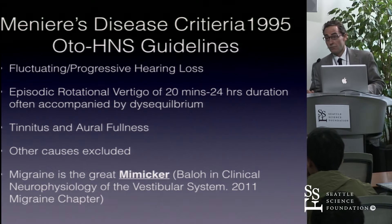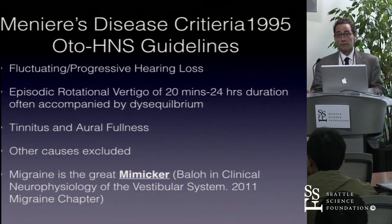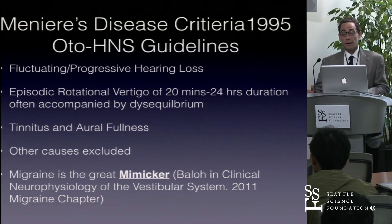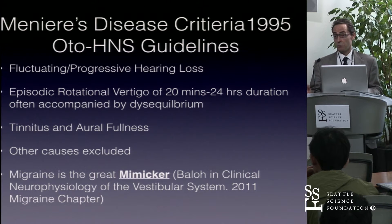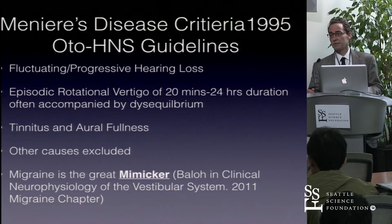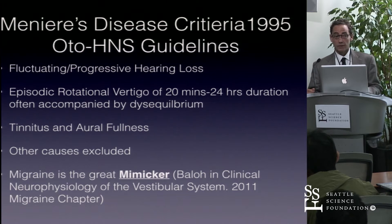I'd like to comment about vestibular migraine — it's a great mimic and you need to keep your eyes open for that. I think what we used to call vestibular Meniere's disease is actually vestibular migraine. In this country, 1% of the population probably have vestibular migraine, while 0.2% have Meniere's disease. When I finished my fellowship in 2000, I would never have guessed vestibular migraine would be more prevalent. And actually, 50% of patients with Meniere's disease can have a vestibular migraine component as well.